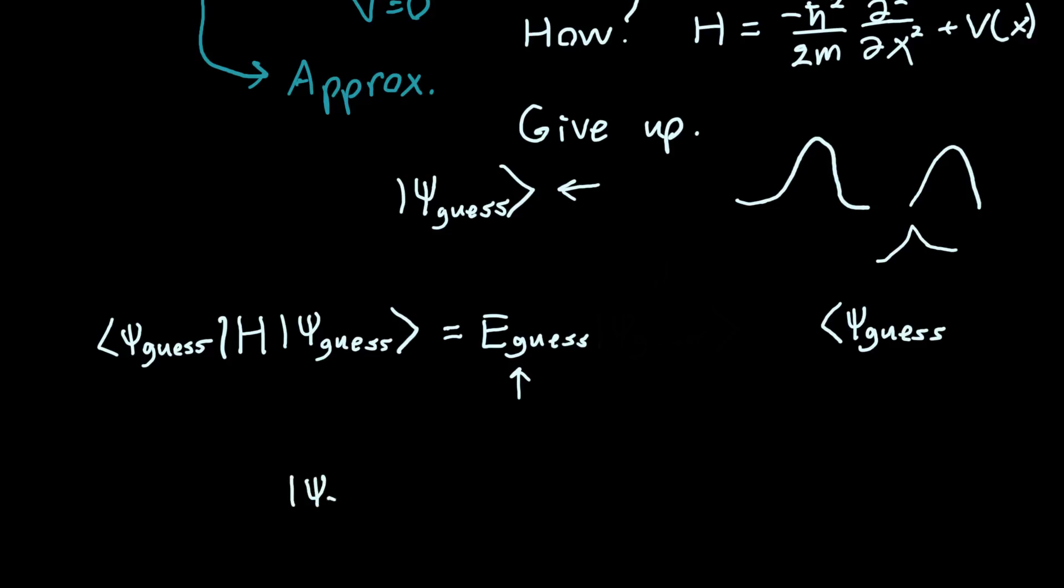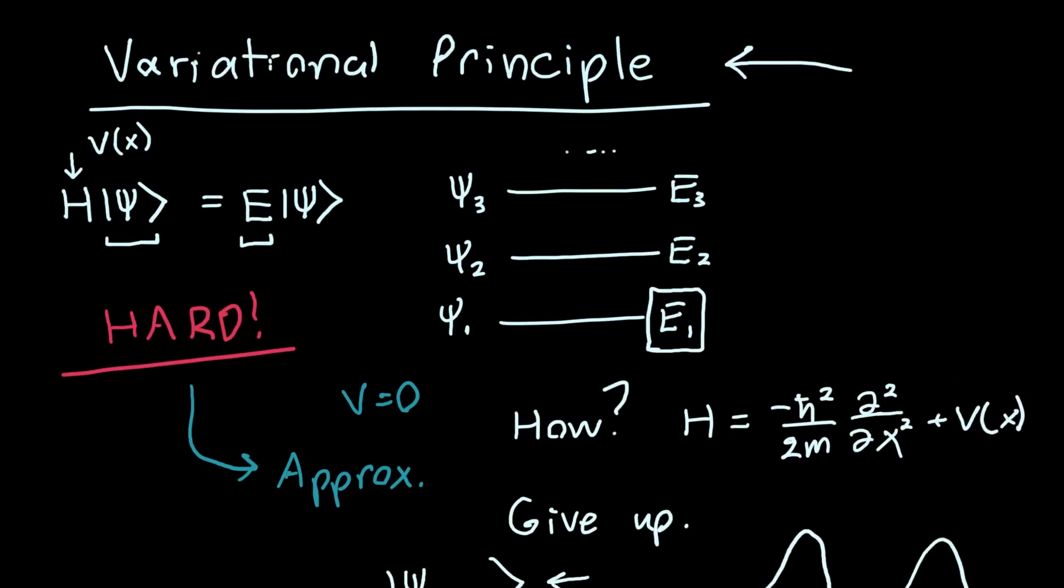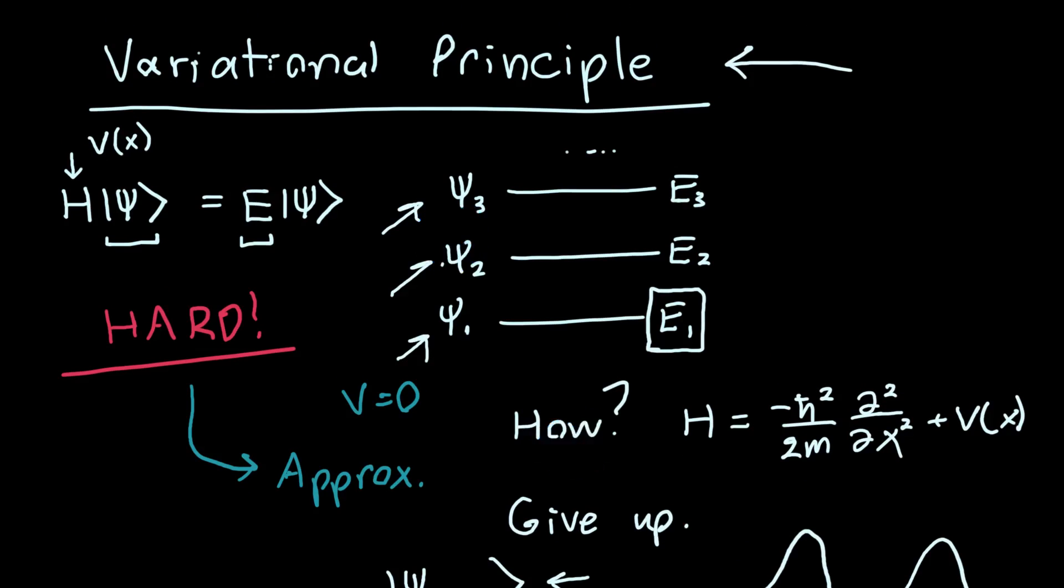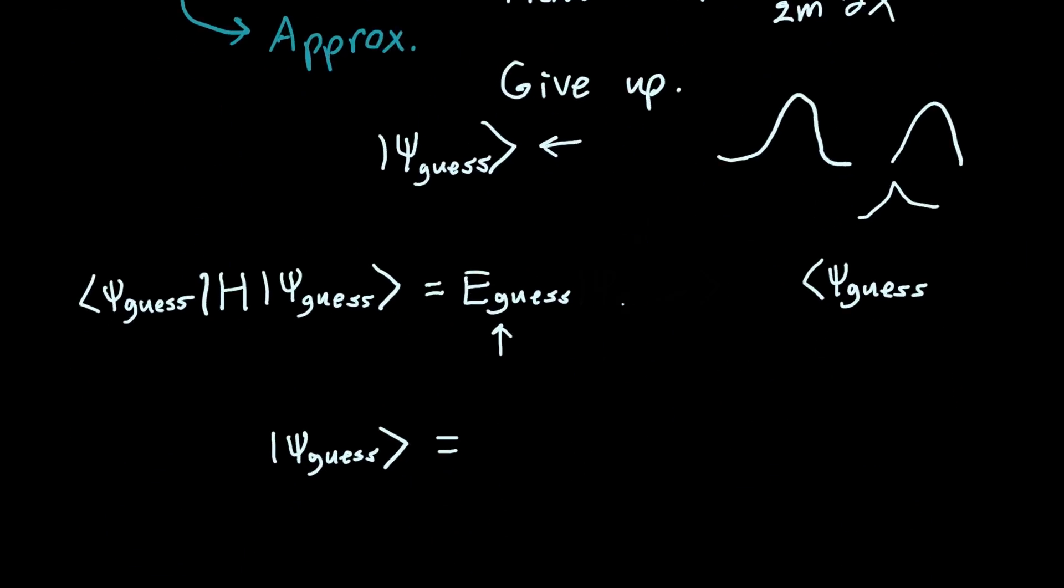So let's find this energy. What is the guess wave function? Well, we can always expand it in terms of our actual solution. We may not know what ψ1, ψ2, ψ3 are—we're trying to figure them out. But in general, as long as our solution set is complete, and it almost always is, then our ψ_guess is just going to be some linear combination of the true wave functions: c1|ψ1⟩ + c2|ψ2⟩ + c3|ψ3⟩ and so on, all the way up to infinity.